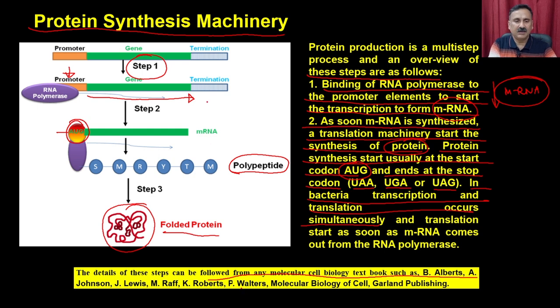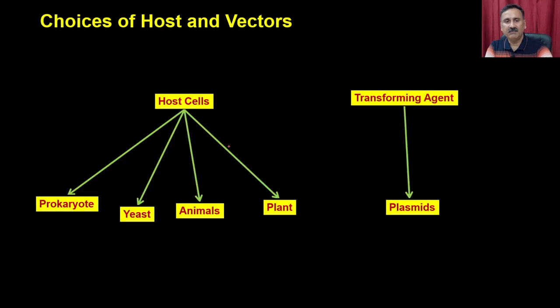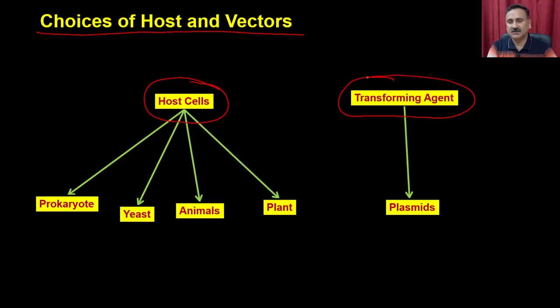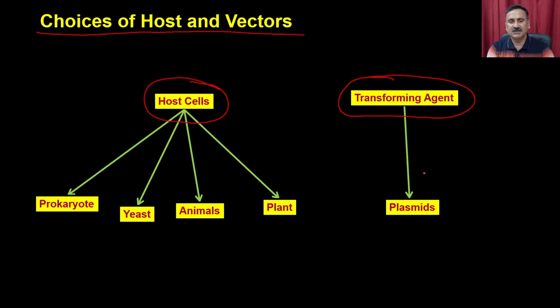You should read the reference provided so that you can understand the subsequent processes that occur inside the host. You need to understand the transcription and translation events so that you can understand how we are actually over-expressing the protein in the host system. Under the in vitro system, you have two different species: the host cells used as the protein production machinery, and the transforming agents which provide the instructions. You put the instructions into the production machinery and use it for protein production.